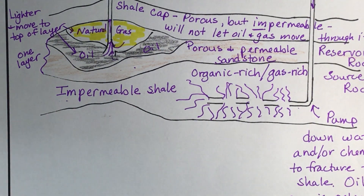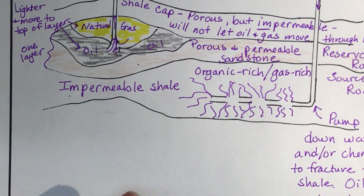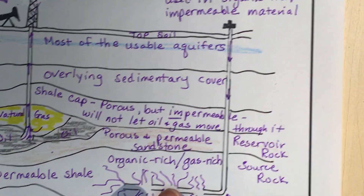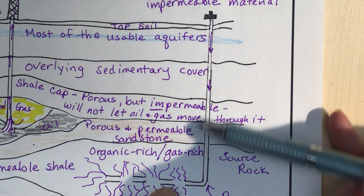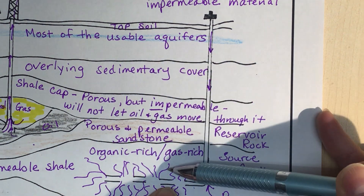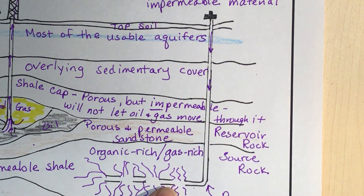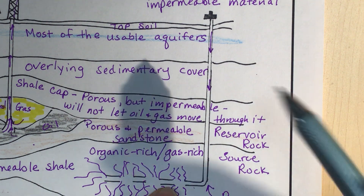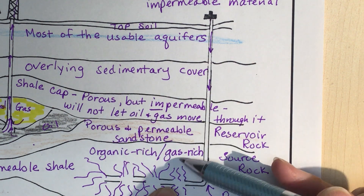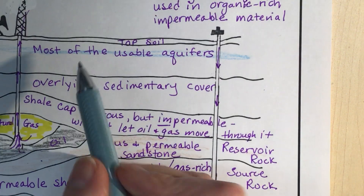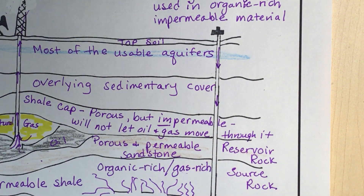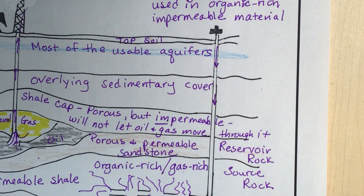One of the problems with fracking is that if aquifers are located near the fracking zone, the fractures can extend into an aquifer and contaminate the drinking water of people who have wells drawing from those aquifers.